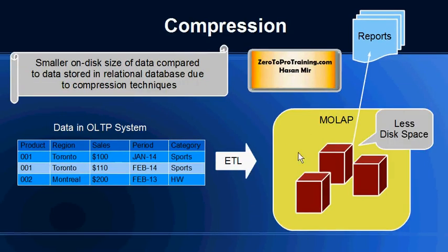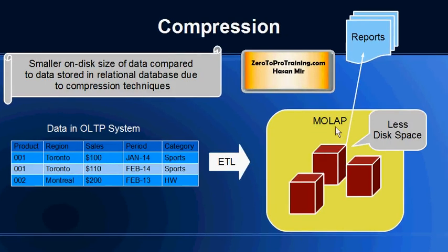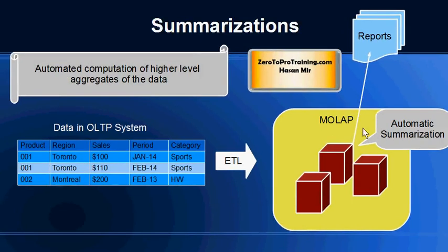The way data is stored in online analytical processing systems in cubes takes less space compared to storing it in relational databases where data is kept in tables. In multidimensional OLAPs, the compression is much better than in relational OLAPs. Another advantage is that when data is stored in cubes, aggregates are automatically calculated.